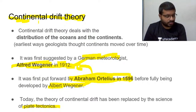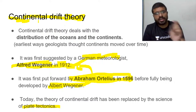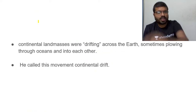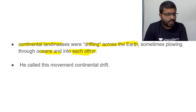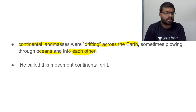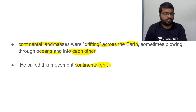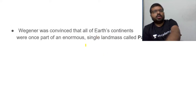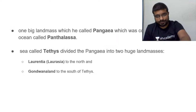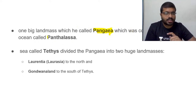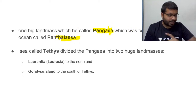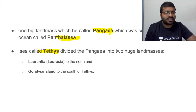Continental drift theory deals with the distribution of oceans and continents. It says that continental landmasses were drifting across the earth, sometimes plowing through oceans and into each other — this movement is called continental drift. According to this theory, there was one big landmass called Pangea, covered by one big ocean called Panthalassa. Pangea means 'complete land' and Panthalassa means 'complete ocean.'